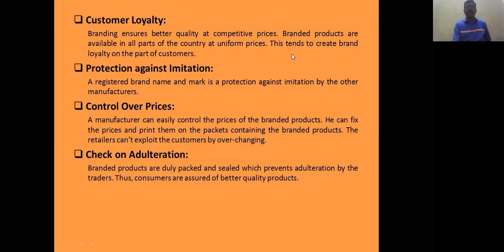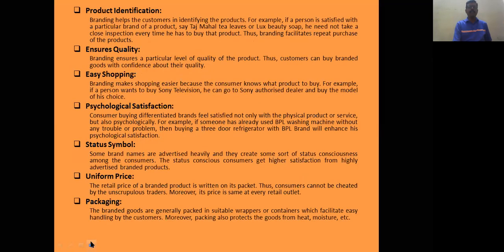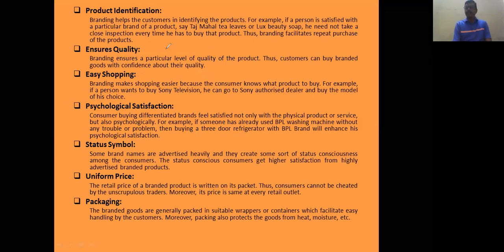Brand quality must be maintained and adulteration — meaning deterioration in quality — must be reduced. A brand creates an identity for the product. For example, Harley Davidson sold at 20 lakh rupees indicates its brand value. Quality means standardization of the product. A product like Remount is purchased for a rupee because it has a certain amount of quality.